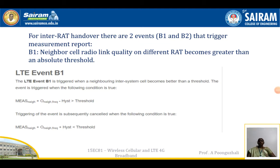Here we have the radio access network procedures for mobility. In continuation of that, we will see inter radio access technology handover. There are two events that are going to occur: B1 and B2, which will trigger the measurement report. B1 is when the neighboring cell radio link on a different radio access technology becomes greater than the absolute threshold, that is LTE1 B1.